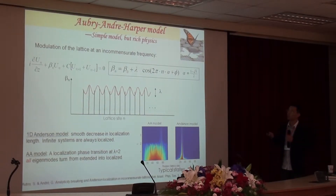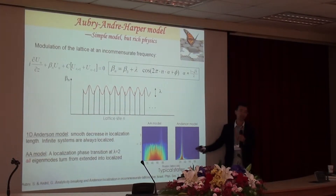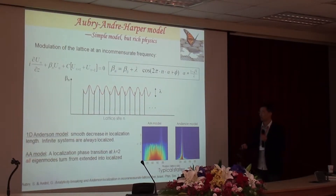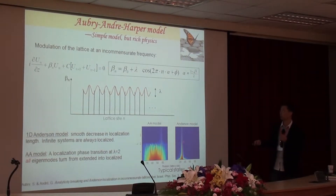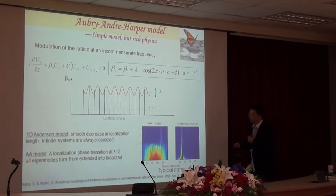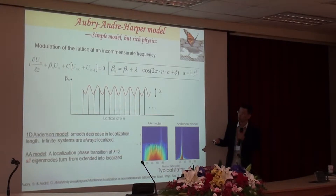For this 1D model, the localization behavior is different from the Anderson model. For the Anderson model in 1D, all states will be localized even for very small disorder strength, and increased disorder strength leads to reduction of the localization length. However, for the Aubry-André model, when the modulation strength lambda is smaller than the critical value, all states are extended over the system; when lambda is larger than the critical value, they become localized.